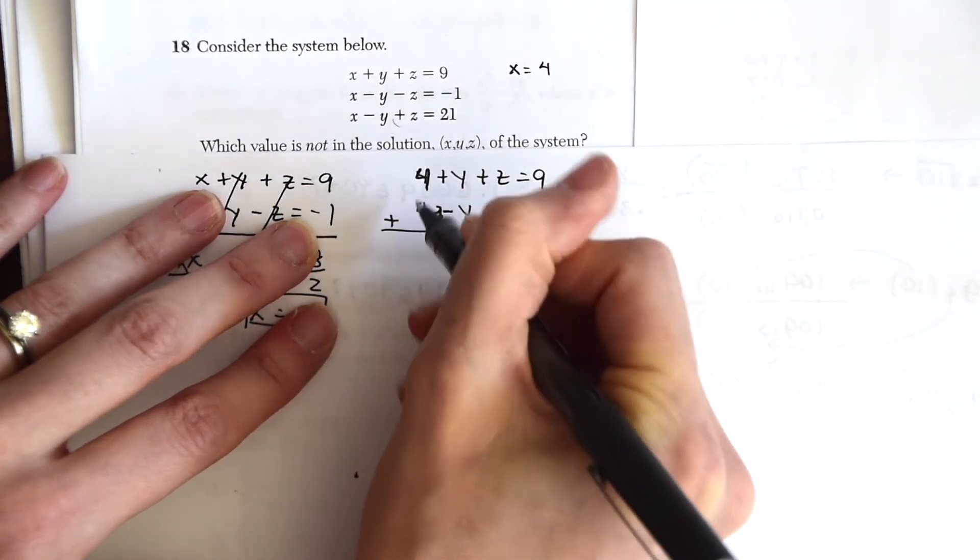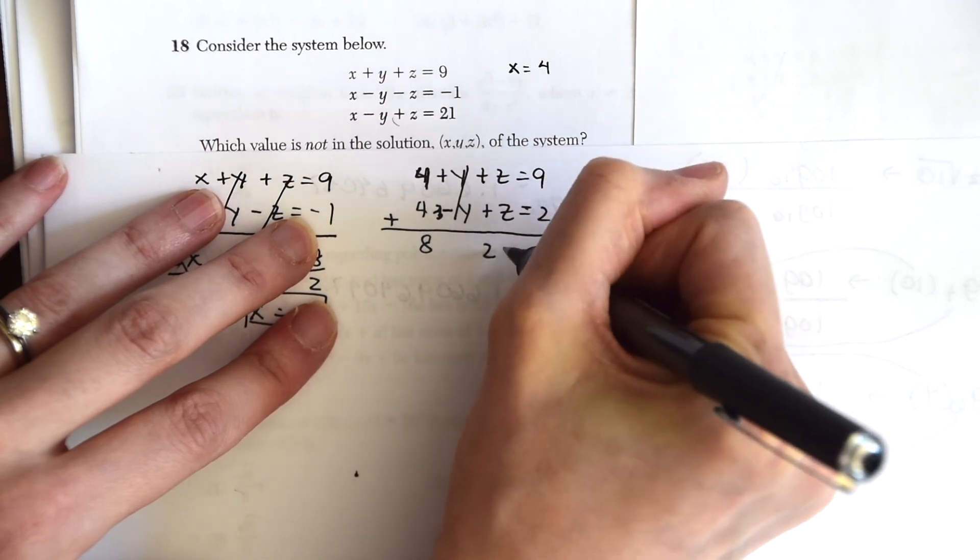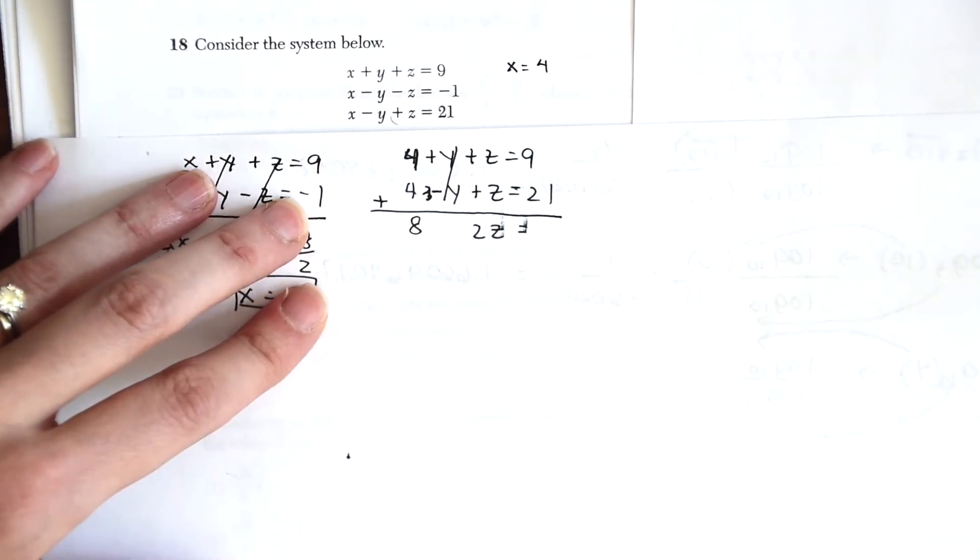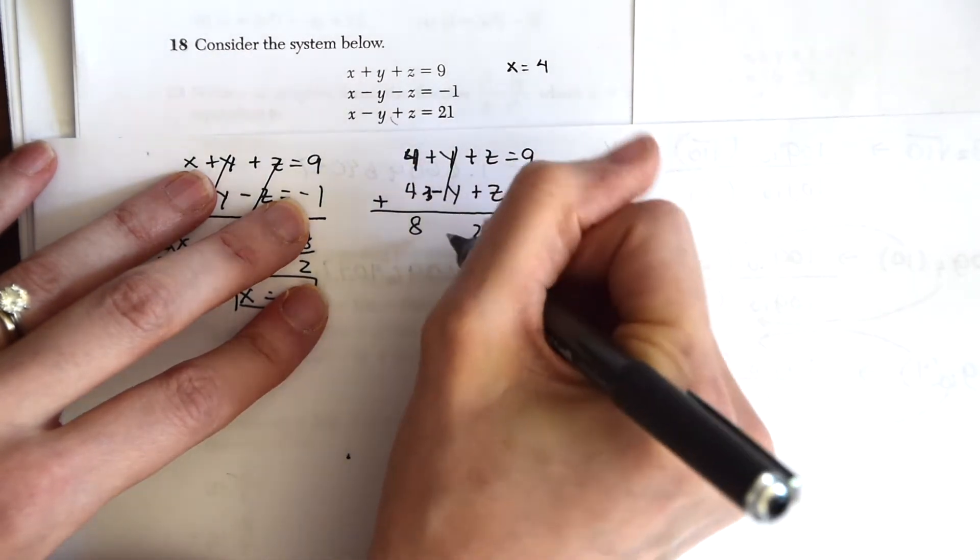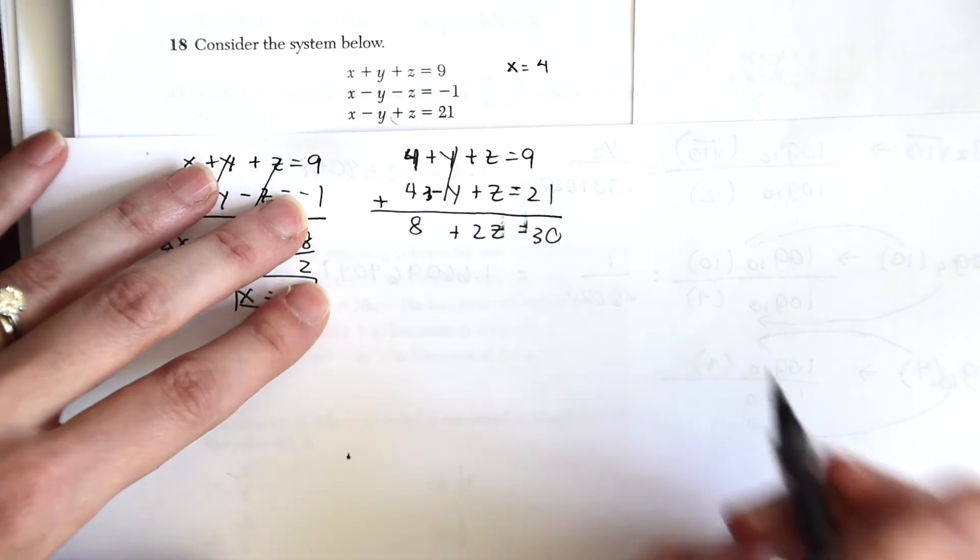So we add these together, we're going to get 8, the y's cancel out, we get 2z, and then we have 9 + 21, which is 30. This is a plus here. And now just solving like a regular algebraic equation.